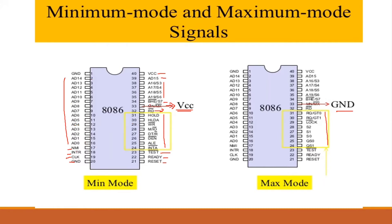This is the minimum module and maximum module. The DT/R bar is called Data Transmit or Receive. When active low, it receives data; when high, it transmits data. The DEN bar is the Data Enable signal used on the address/data lines.